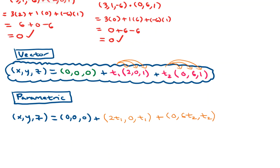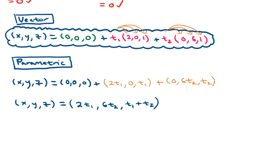Now we'll go ahead and add all three corresponding components. (x, y, z) on the left equals, if you add the first component of each of the three vectors, we're going to have 0 plus 2T₁ plus 0, so the first component is 2T₁. If you add the second component of each vector, we're going to get 6T₂. And if you add the third component of each of the three vectors, you're going to get T₁ plus T₂.